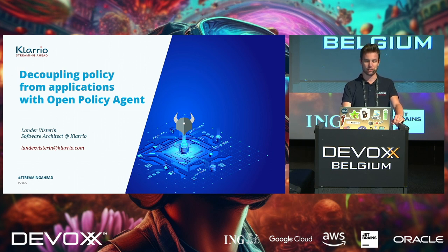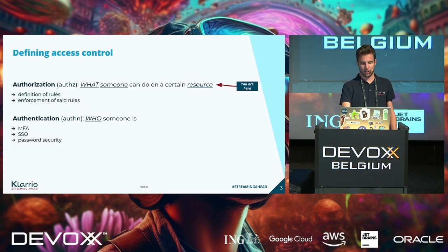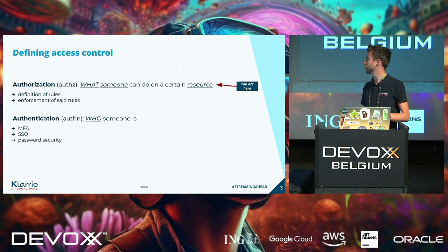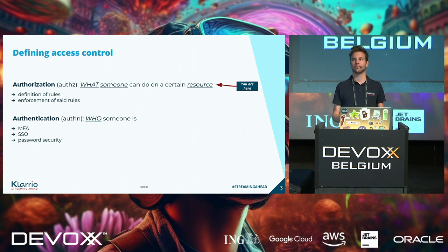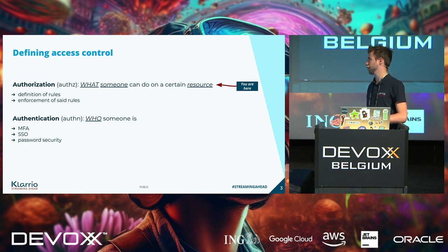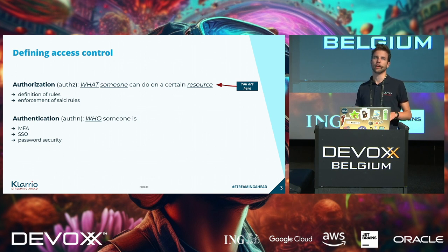Let's go over access control in general. When we talk about access control, there are really two important aspects that come into play. The first one is authorization — that's about what someone can do on a certain resource, covering the definition and enforcement of rules. Completely separate from that is authentication, which is concerned with who someone is: your SSO, your multi-factor authentication, things like that. Authorization builds on the premise that you have an authenticated user and you want to know what they are allowed to do or not.